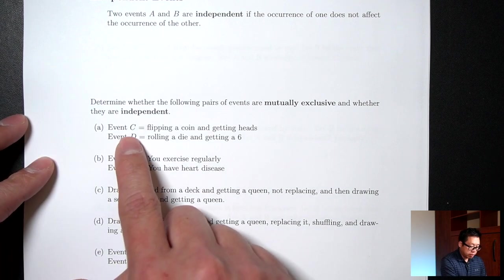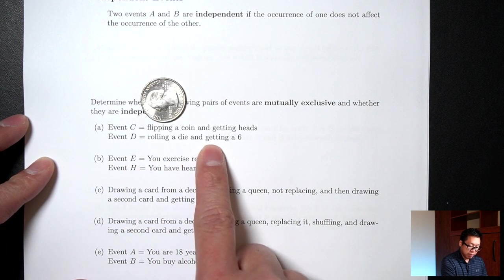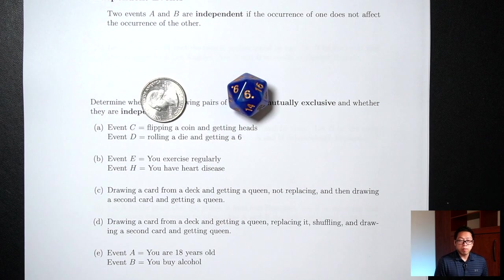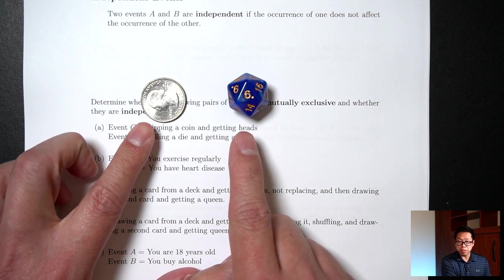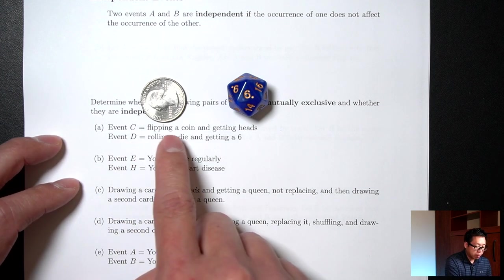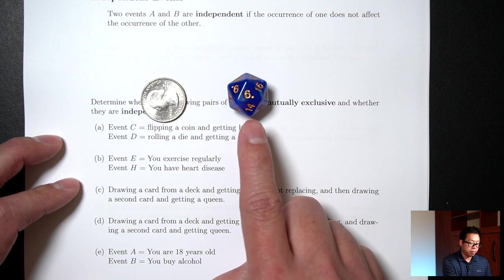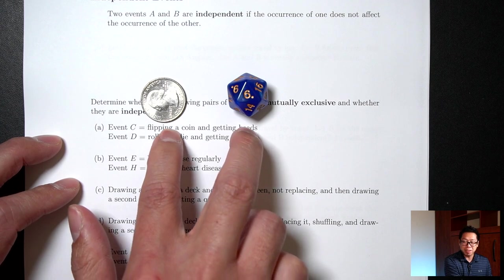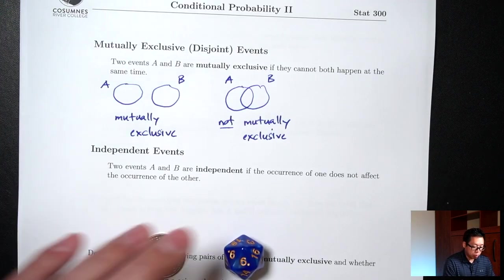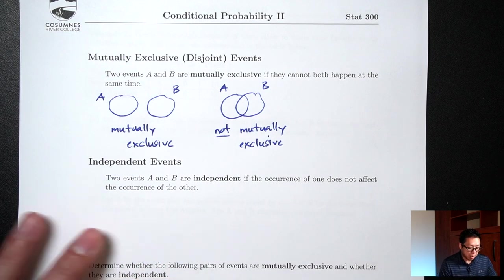Part A: Event C is flipping a coin and getting heads. Event D is rolling a die and getting a six. First, are these two things mutually exclusive? Can you get heads on a coin and at the same time get a six on a die? Yes, you can — they're both happening at the same time. So since they can happen at the same time, this is not mutually exclusive.